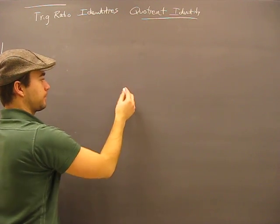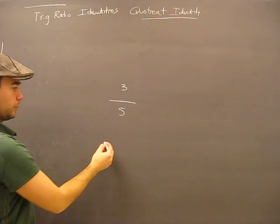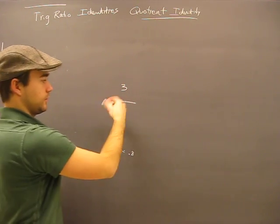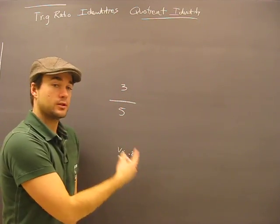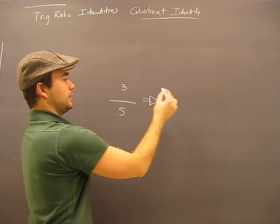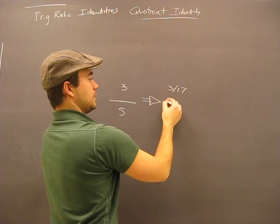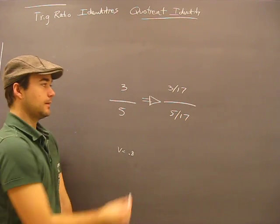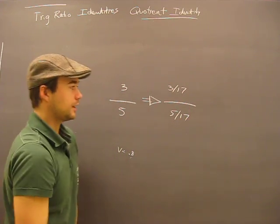If I had a fraction three over five, well we know that the value of this is point six, that's just a division. If I said I'm going to change the way it looks and make it look like something else, divide both by seven. Will this be the same value, also point eight?